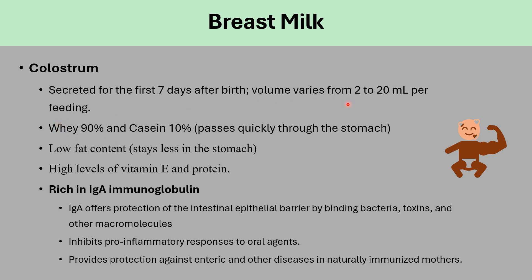It is okay for the mom to feed continuously in the first 7 days of life, every 1 to 1.5 hours. Why? Because this milk contains 90% whey, which doesn't exist in any other milk, and only 10% casein. The less the casein, the faster the milk will pass through the stomach — the transit time is very short. So the mom is okay to feed every 1 to 1.5 hours, with continuous feeding in the first 7 days of life.